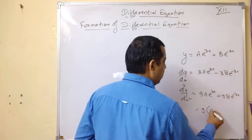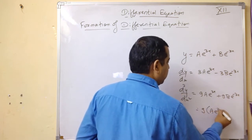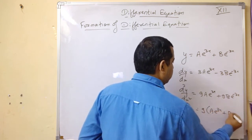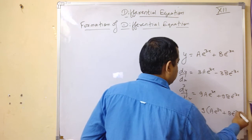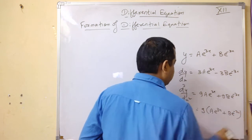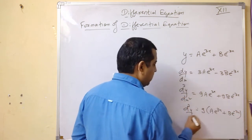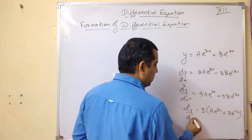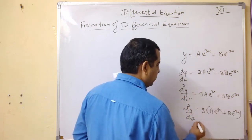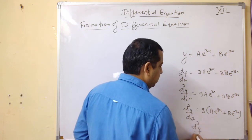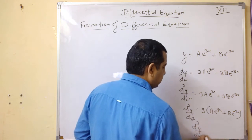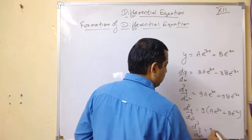d²y/dx² = 9ae^(3x) + 9be^(−3x). Taking 9 common gives ae^(3x) + be^(−3x), which is nothing but y. So d²y/dx² = 9y.